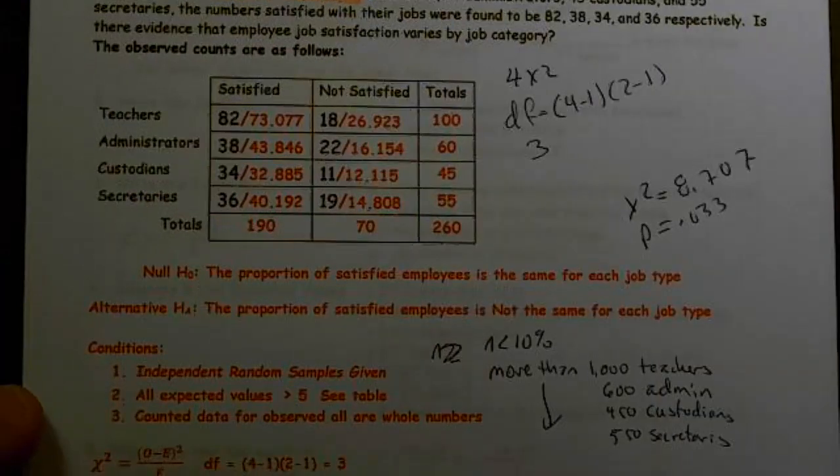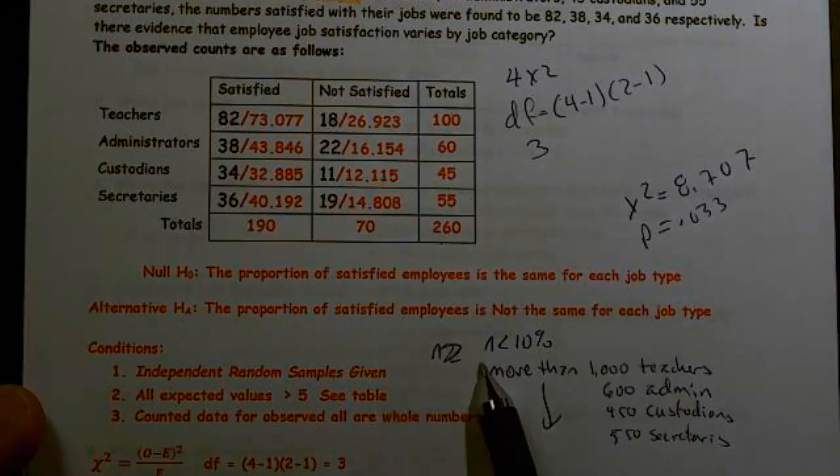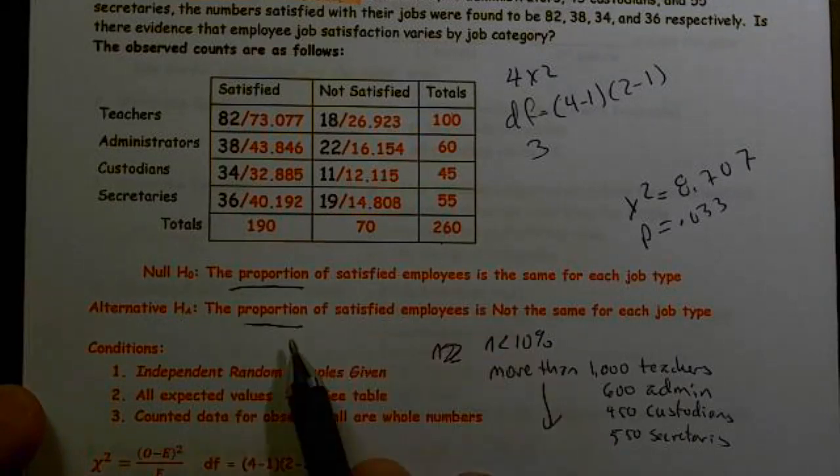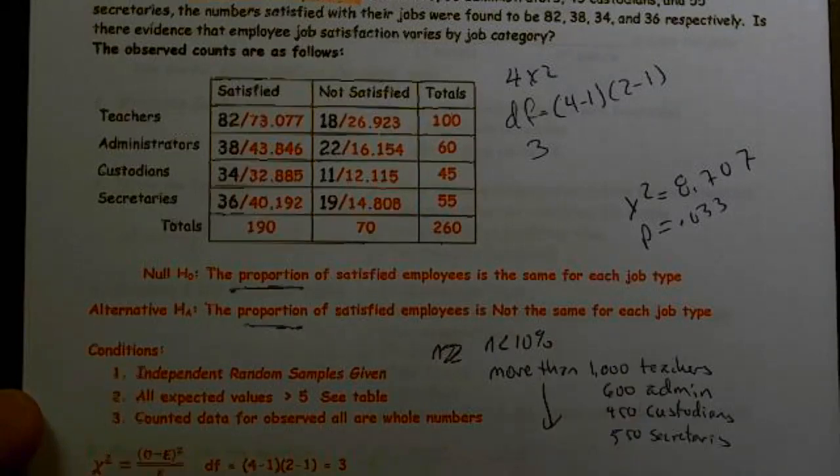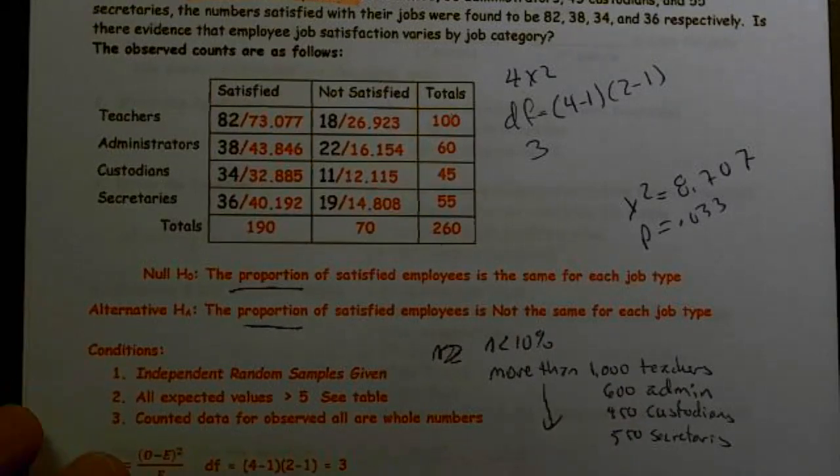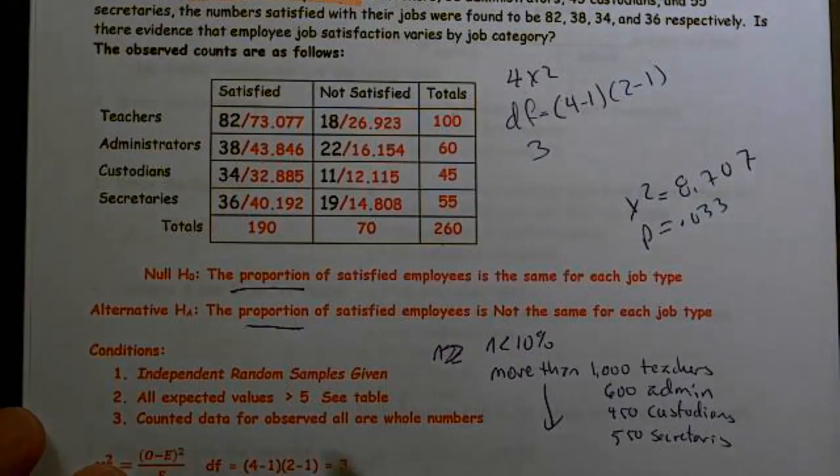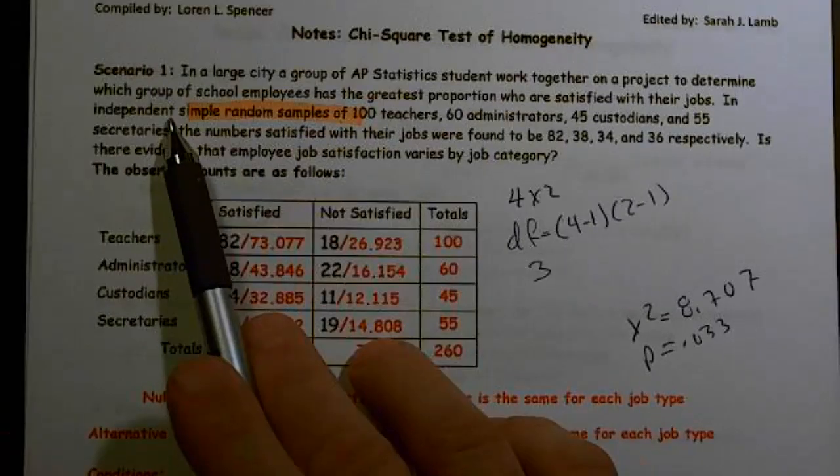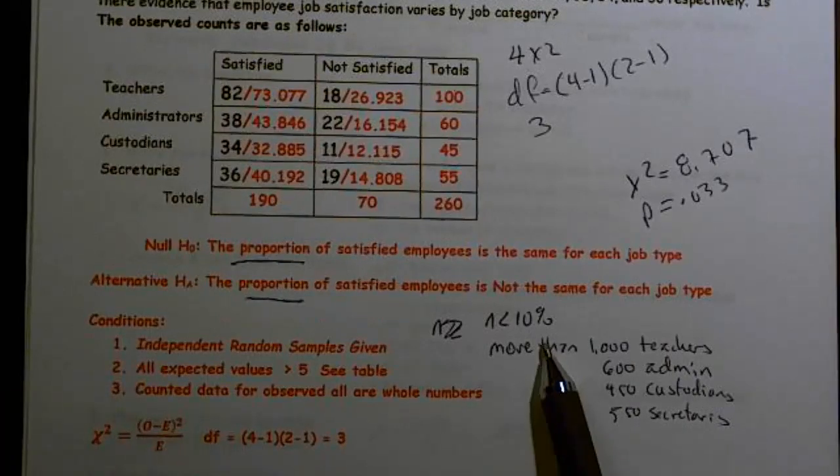So the proportion of satisfied employees is the same for each job type. We want to be using the word proportion. And here the proportion of satisfied employees is not the same for each job type. Our samples: independent random sample that was given. They told us we had independent simple random samples.